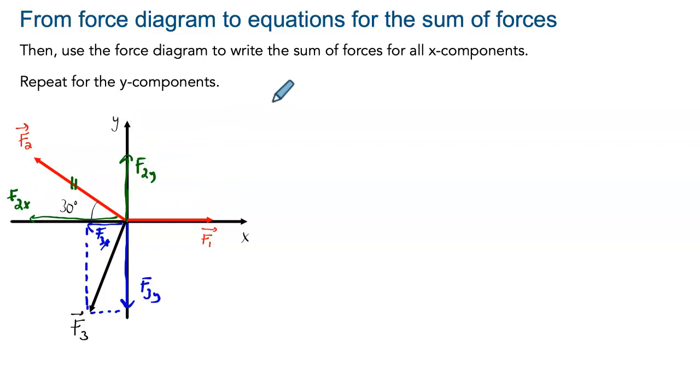So if we start with the x-axis, we know that in order to be in equilibrium, the sum of force must be equal to zero. Sum of forces, a typical way to write it is sum of forces on the x-axis will be equal to zero. And this big symbol, sigma, just means the sum.